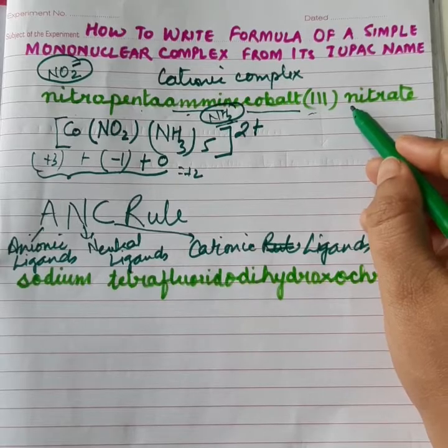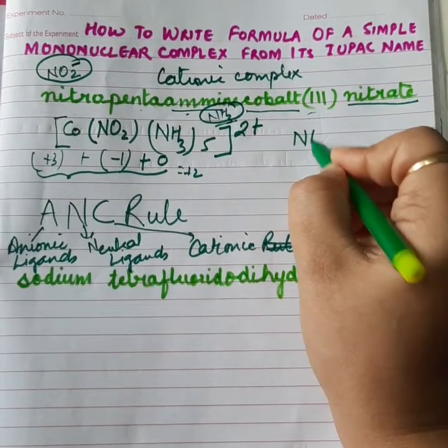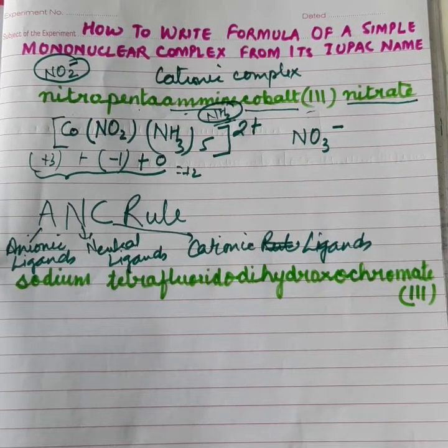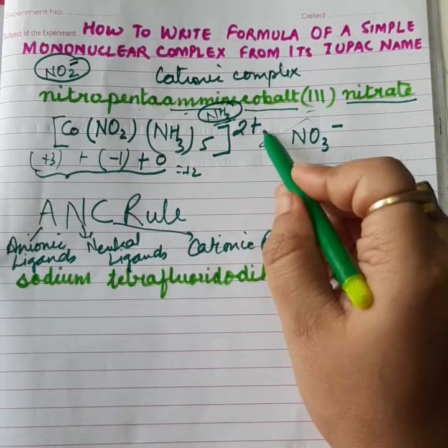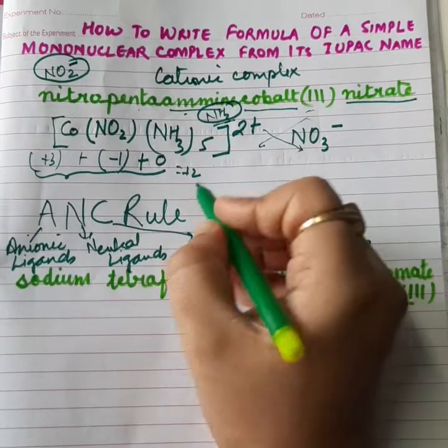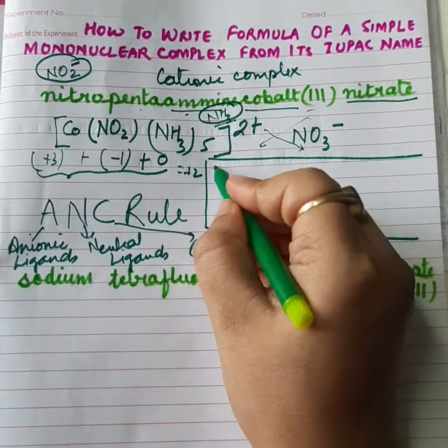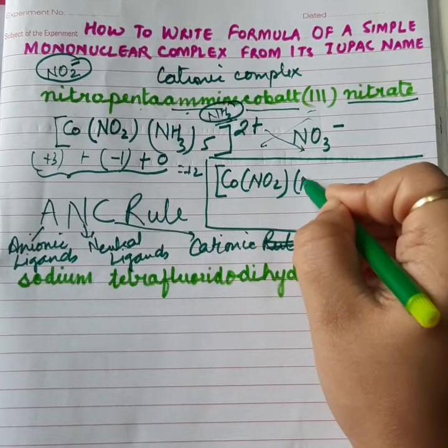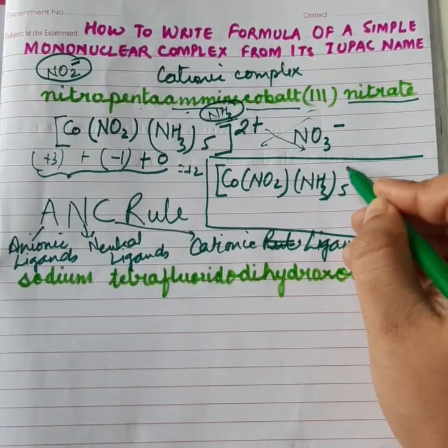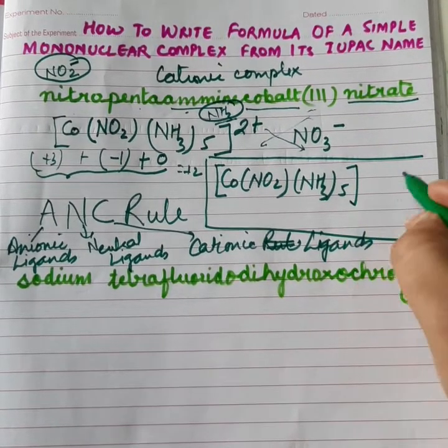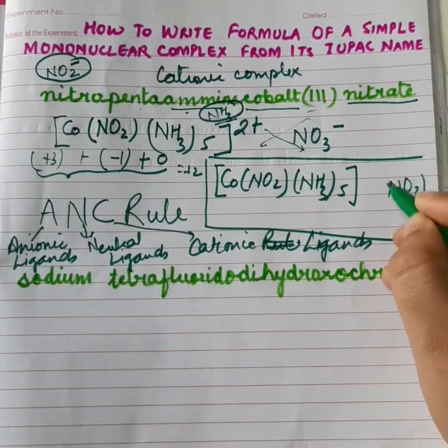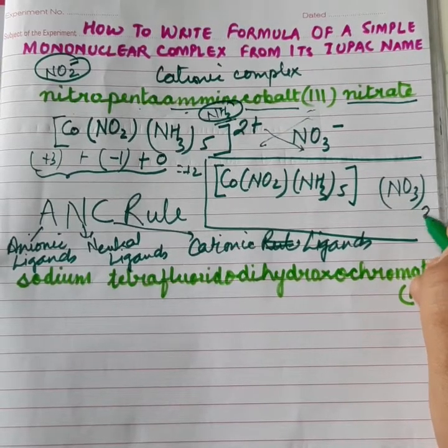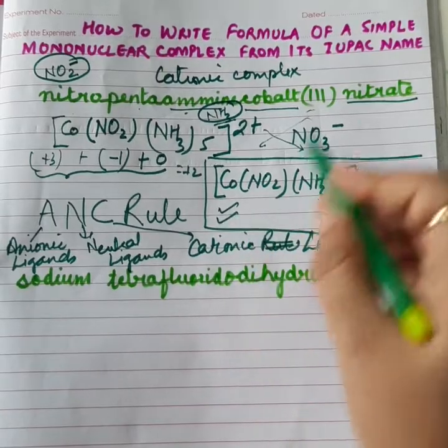Now, we will write the anionic part of the complex. The anion is nitrate - NO3 minus. Now, to write the final formula of the complex as per the rules taught in the lower classes, valencies will be interchanged. So, as a result, the final formula of the complex becomes in the bracket Co NO2 NH3 whole 5, bracket closed. NO3 carries 1 charge, so nothing will be coming here. And on the cation, 2 positive is present, so it will be interchanged. So, NO3 whole twice. This becomes the formula of this example.